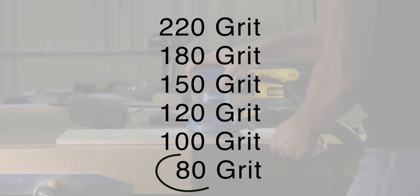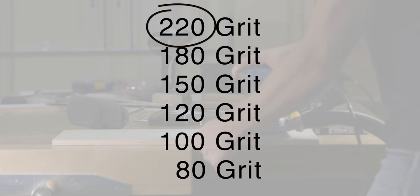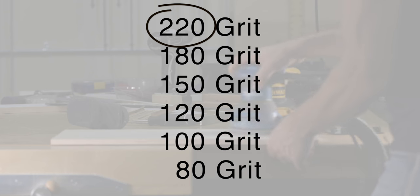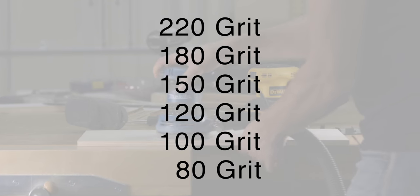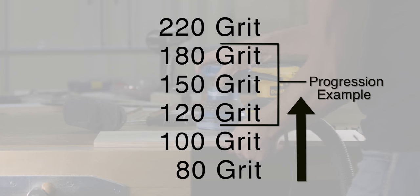Let's talk about sanding progression, which simply means sanding through the different levels or stages of sandpaper grits. The lower the number, the more aggressively the sandpaper removes material but the deeper the scratches. The higher the number, the less it will remove but the shallower the scratches. In general, it's best to progress through at least three to four sandpaper grits, starting lower and working your way up. Ultimately it's through trial and error where you figure out your own progression for your specific tools and projects.